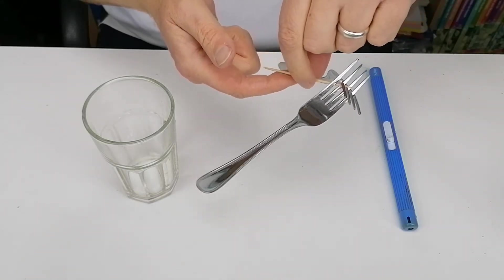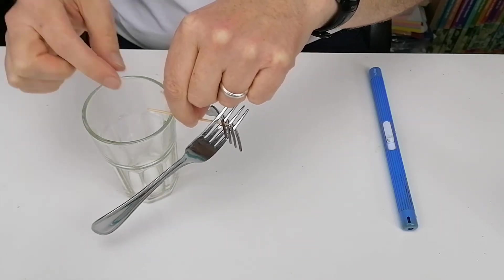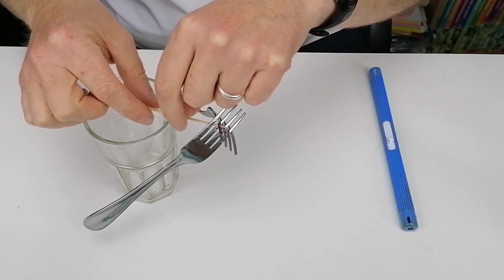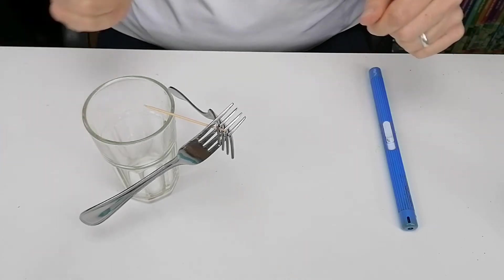So if we now place this on the glass and try and find that center of mass again, it takes a little bit of work. Now you can see that it balances on the glass.